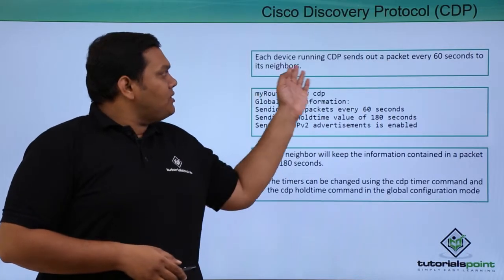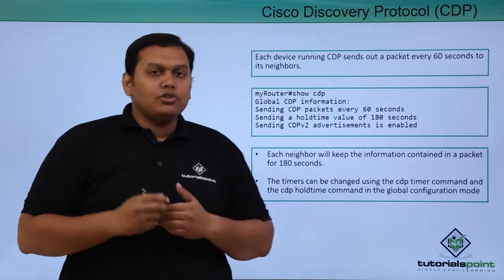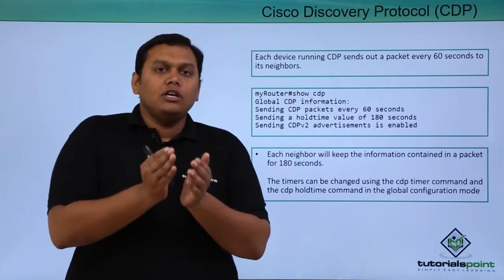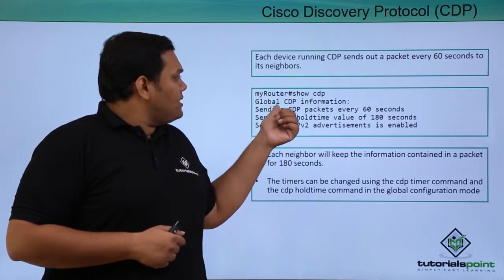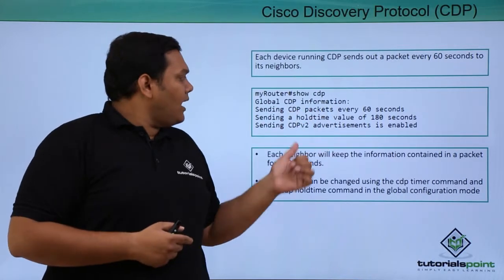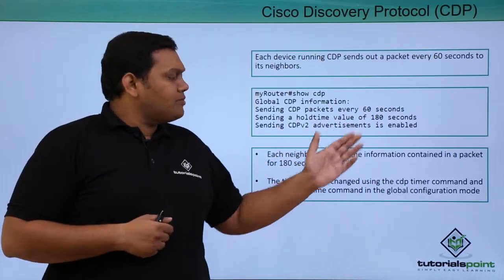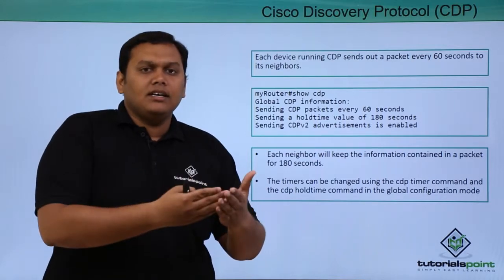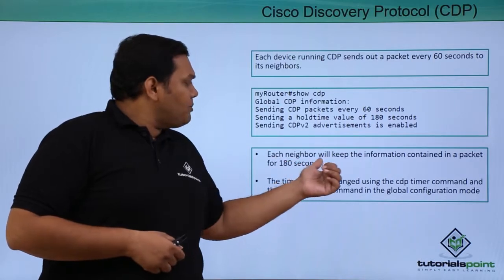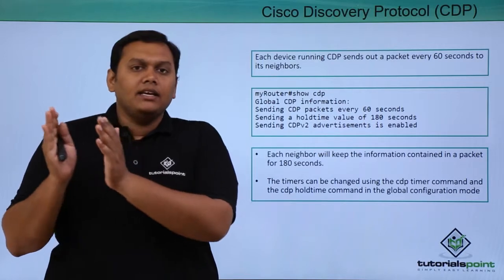Each device running CDP sends out a packet every 60 seconds to the neighbors to know the connection is still active. The 'show CDP' command shows global CDP information — CDP packets are sent every 60 seconds and the hold time value is 180 seconds. CDP version 2 advertisement is enabled, meaning advertisements are sent to neighbors, and each neighbor keeps the received information for 180 seconds.